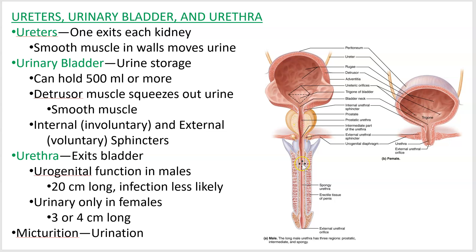Once urine exits the sphincters, it enters the urethra. Males have a longer urethra than females because it has to travel through the penis before reaching the outside. One benefit is that males are less likely to get urinary tract infections, because bacteria traveling up the urethra are more likely to be flushed out before reaching the bladder. Females have a shorter urethra, so it's easier for bacteria to get in. The process of urination has a technical name — micturition.